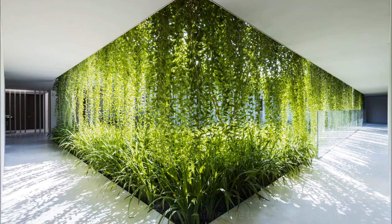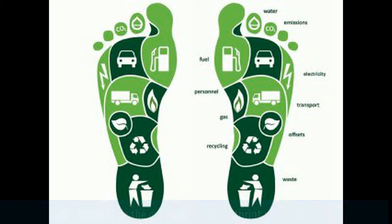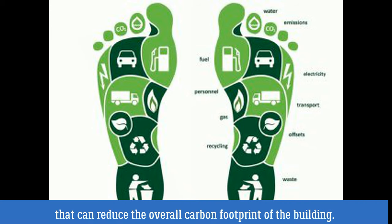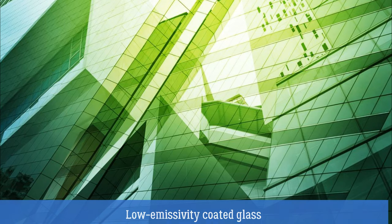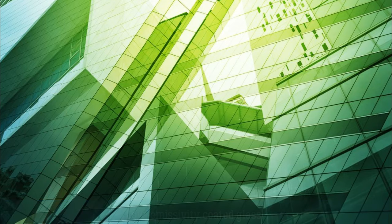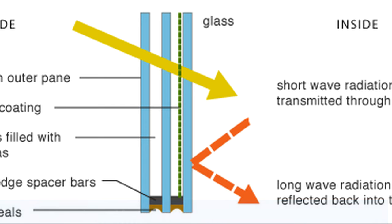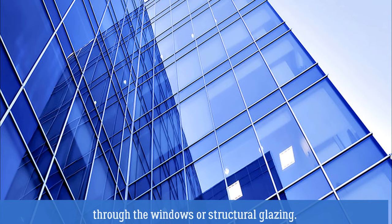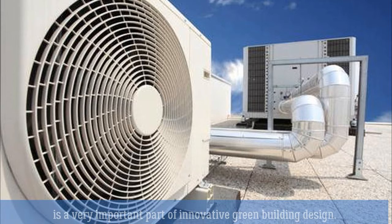Innovation: a green building must also use innovative technology systems that can reduce the overall carbon footprint of the building. Low-emissivity coated glass can be used to prevent indoor heat gain through windows or structural glazing. The use of energy-efficient air conditioners is a very important part of innovative green building design.